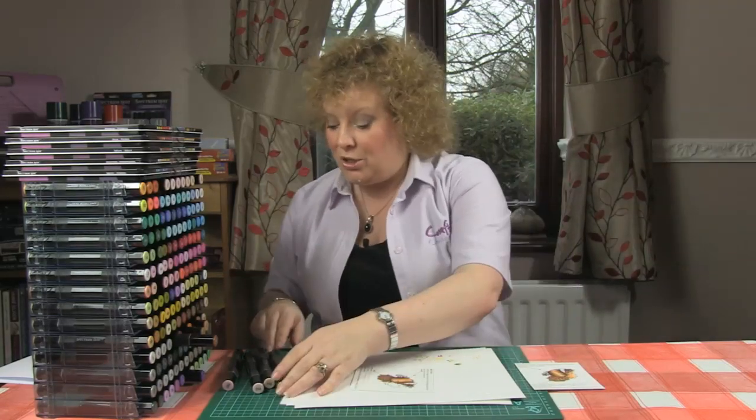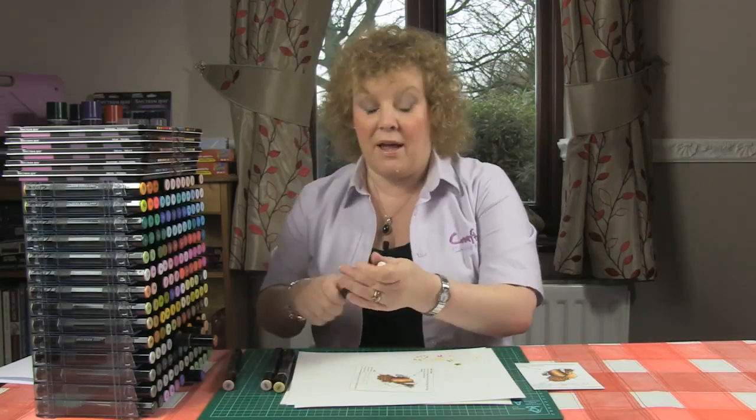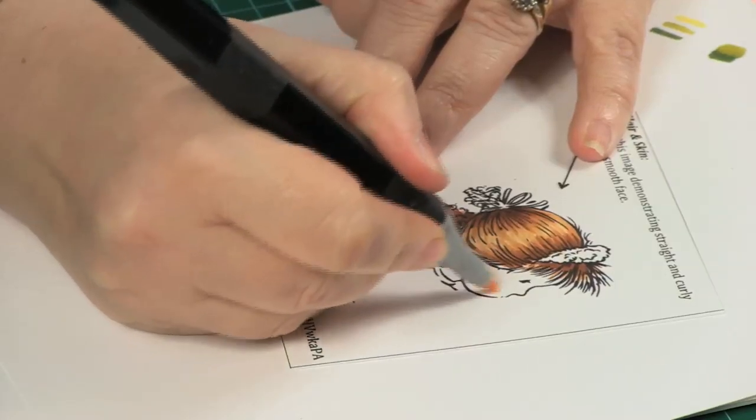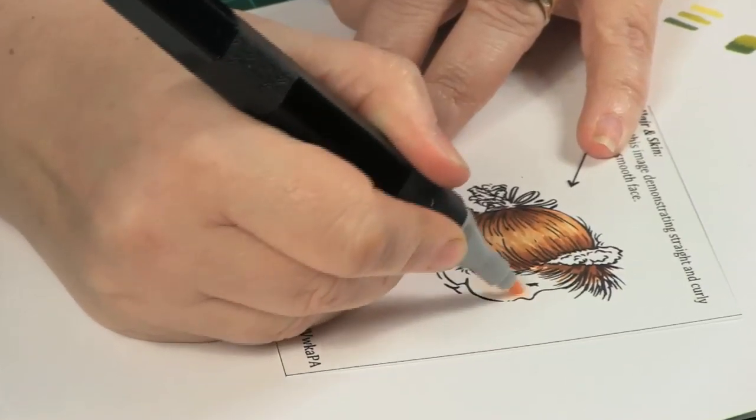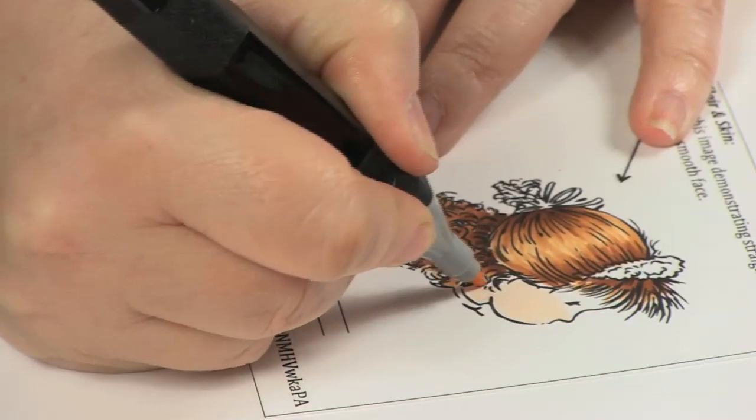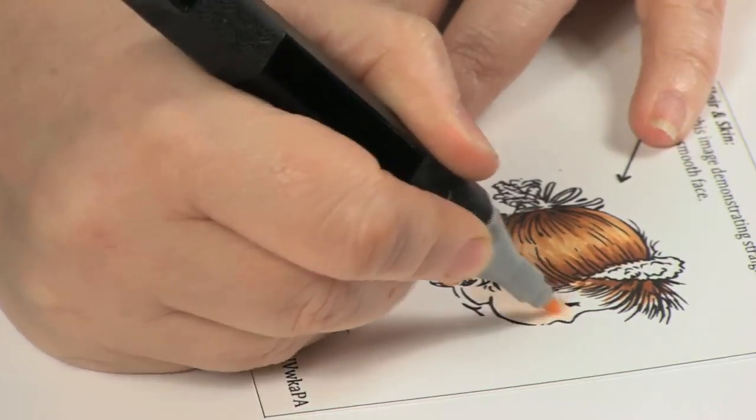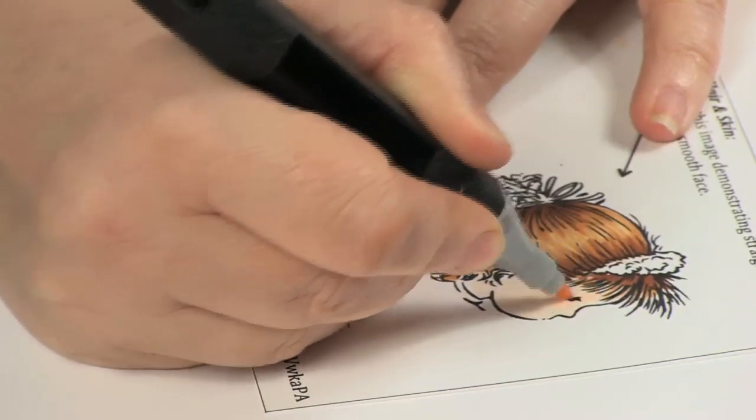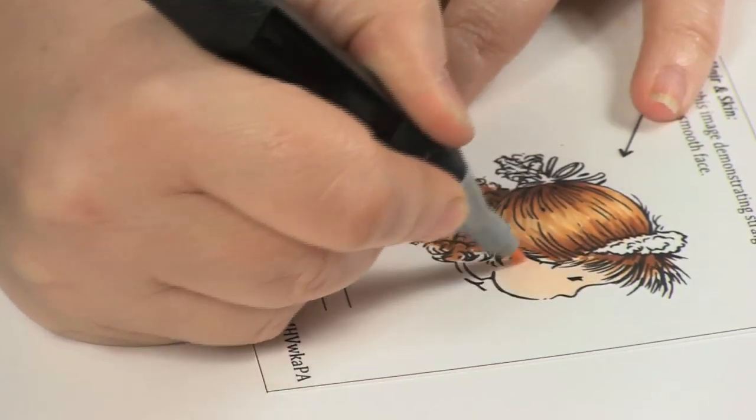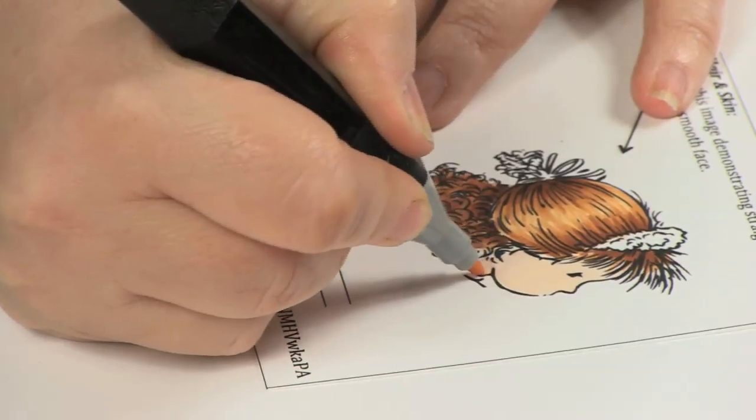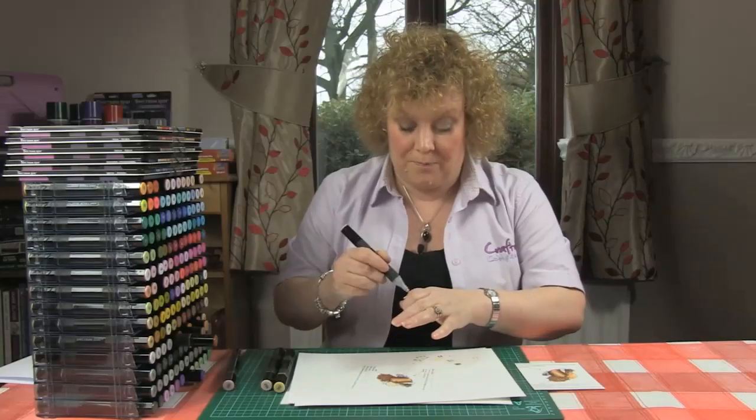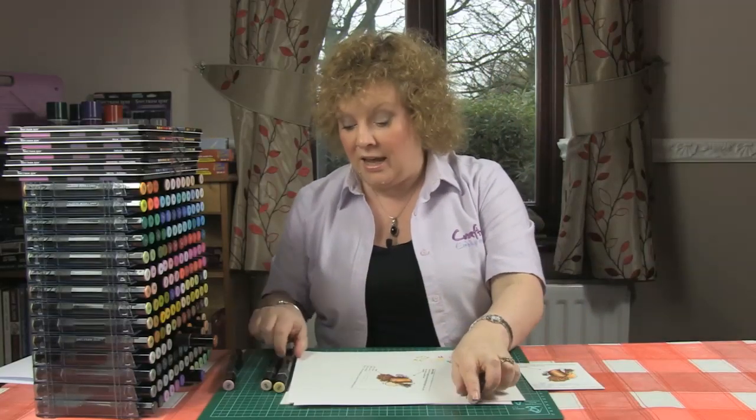The first pen I'm going to use is the lightest, my FS2. I'm just going to color all the base of her face with FS2, aiming to get that lovely even saturation of color. You want to really get a good wetness of ink on there because that's how you will get a much better blend.